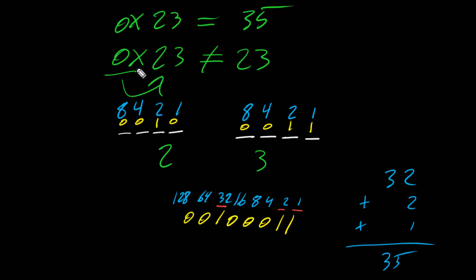This is one reason why we see the prefix 0x in front of a hexadecimal number — it tells us the following number is in the hexadecimal number system. Again, here we also used binary as a bridge going from hexadecimal to decimal. Now, how can we directly go from hexadecimal to decimal? We can use the place values of the hexadecimal number system.